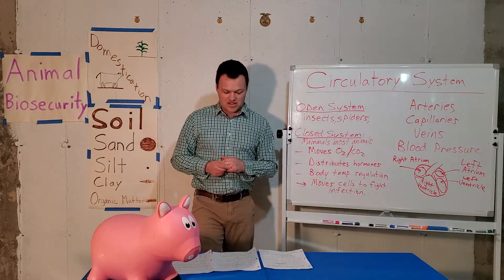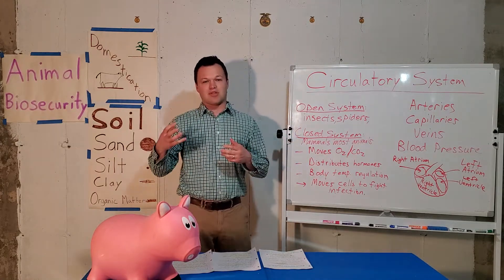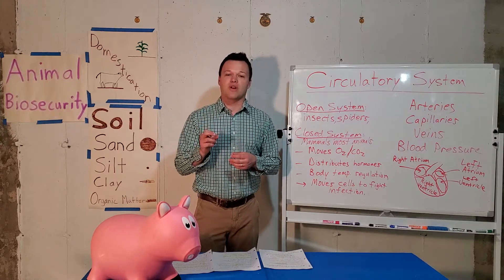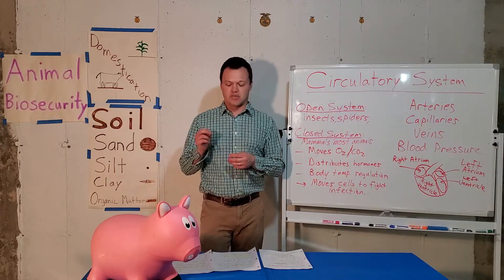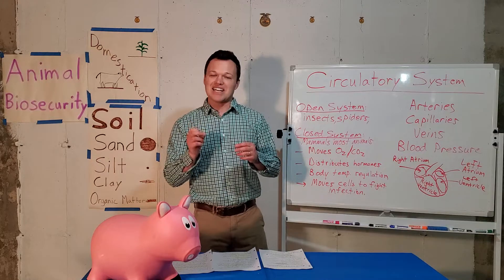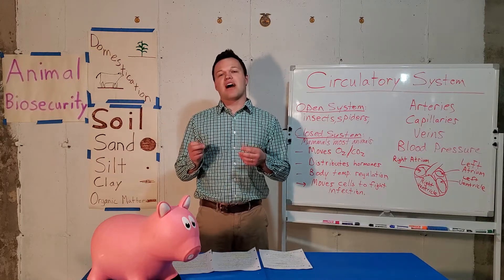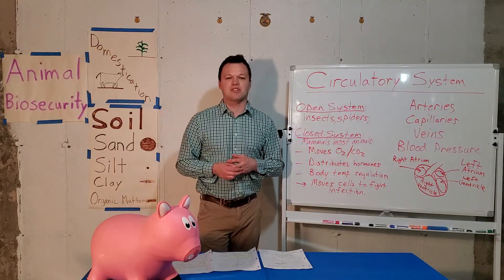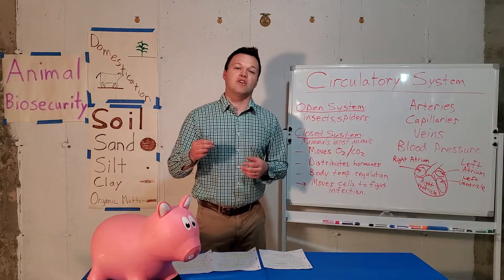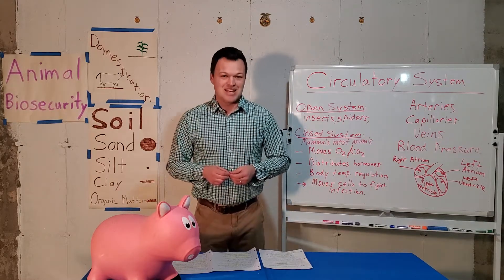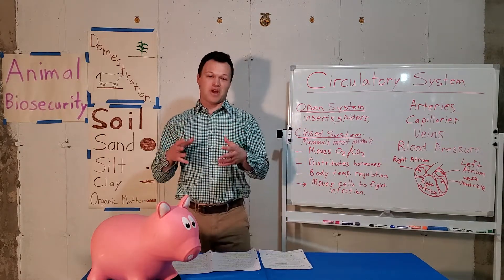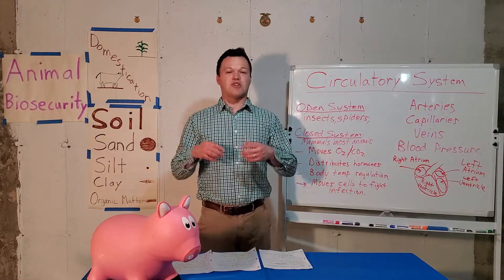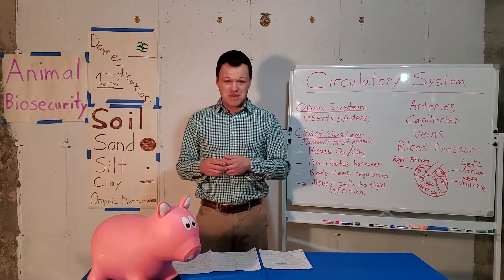In the animal kingdom, the larger the animal, the slower the heart rate; the smaller the animal, the quicker the heart rate and also the metabolism. When you think about tiny mice, they have extremely high heartbeats. For example, a hamster might have a heartbeat of 150 to 200 beats per minute. The blue whale, when diving into the ocean, has a heartbeat of roughly four to eight beats per minute.